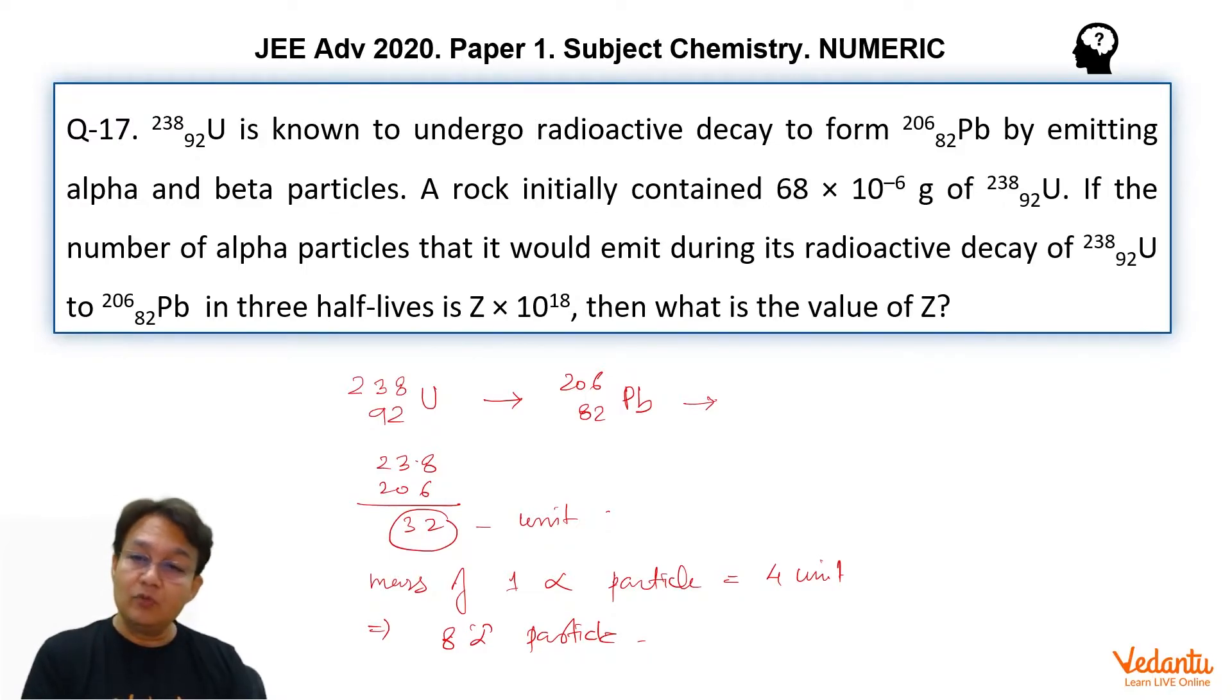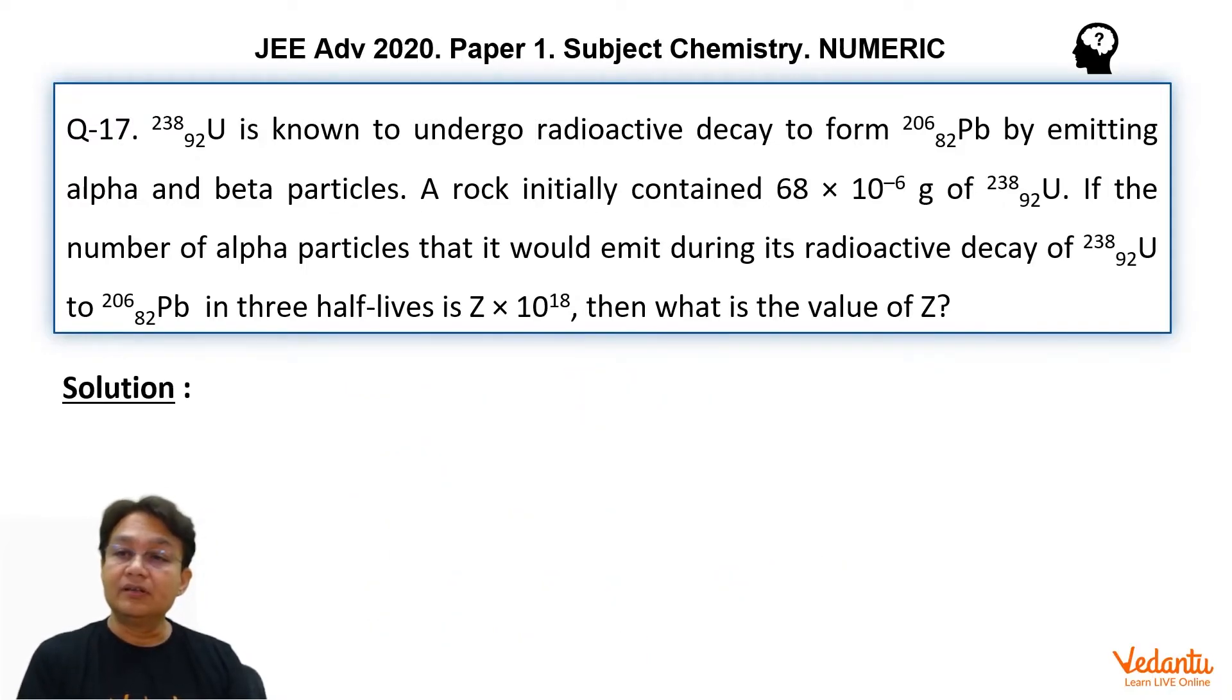Next, how many moles of uranium is there? So to find out the moles of this, this is 68 upon 238 × 10^-6. As you can see here, this is number of moles of uranium-238.